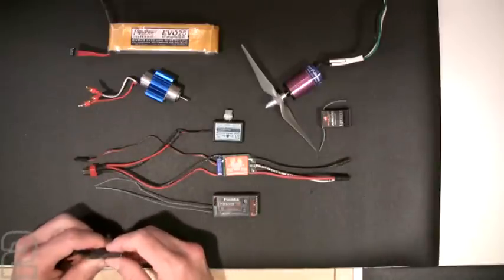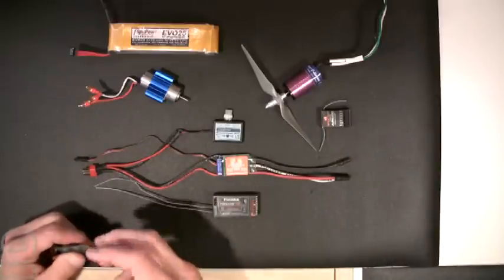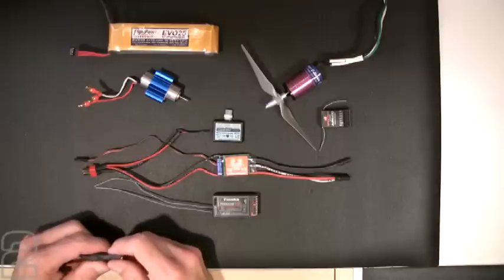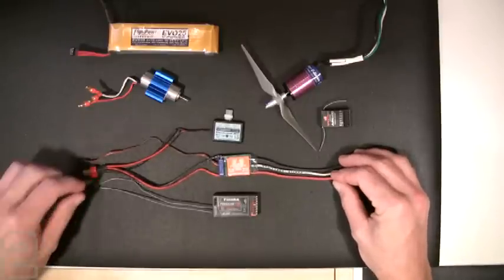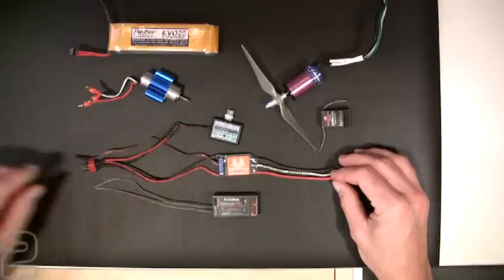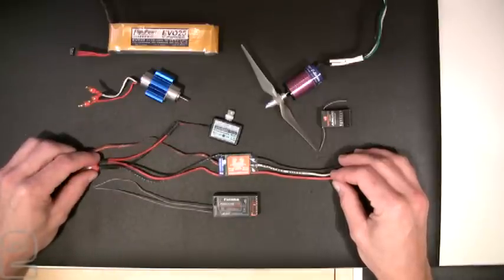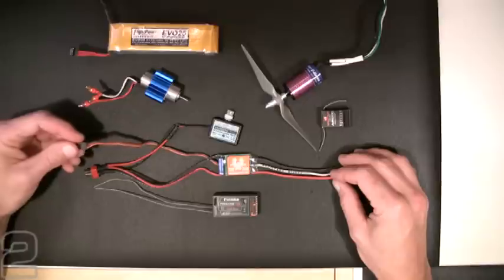Now some ESCs have additional data logging capabilities, you can connect to them with outboard devices, but ultimately they have three wires that connect to the brushless motor, they have two wires that come out of them to connect to your flight battery, and they have a radio system connection.